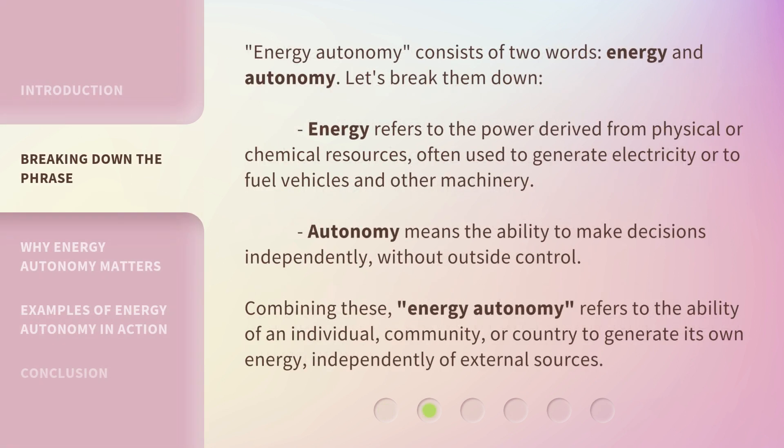Energy Autonomy consists of two words: energy and autonomy. Let's break them down. Energy refers to the power derived from physical or chemical resources, often used to generate electricity or to fuel vehicles and other machinery. Autonomy means the ability to make decisions independently, without outside control. Combining these, energy autonomy refers to the ability of an individual, community, or country to generate its own energy, independently of external sources.